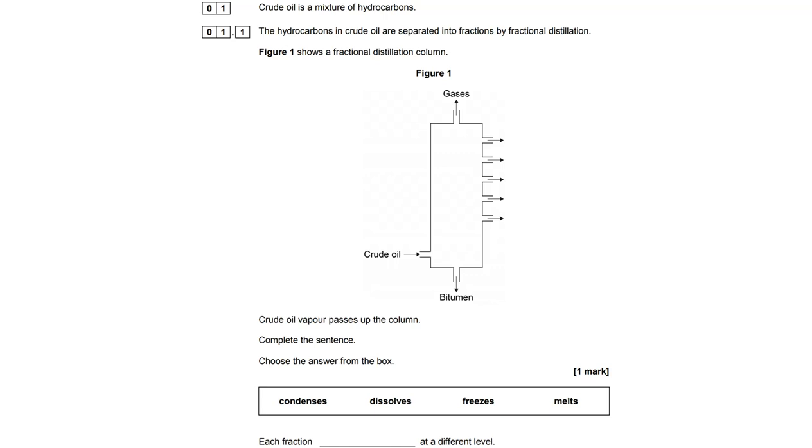This is AQA Coordinated Science Chemistry Higher Paper 2 from June 2018, and this is question one. We've got here a fractionating column, fractional distillation, and we've got a very simple question at the bottom, just a missing word.